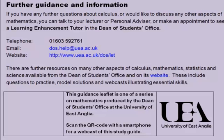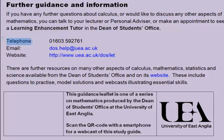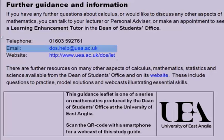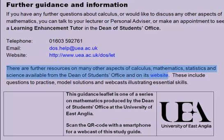For further guidance and information: if you have any further questions about calculus or would like to discuss any other aspects of mathematics, you can talk to your lecturer or personal advisor, or make an appointment to see a learning enhancement tutor in the Dean of Students office. You can call 01603 592761, email dos.help@uea.ac.uk, or visit the website at www.uea.ac.uk/dos/let. There are further resources on many other aspects of calculus, mathematics, statistics and science available from the Dean of Students office and on its website, including questions to practice, model solutions, and webcasts illustrating essential skills.